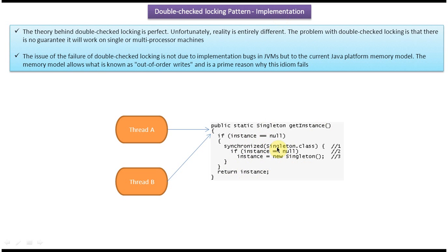So the lock is put only when it is really needed. Let's see what happens when two threads simultaneously enter the getInstance method. Suppose thread A comes and enters the getInstance method. It checks if instance equals null — yes, instance equals null — so it will come here and acquire the lock. At this line, thread A has already put the lock.